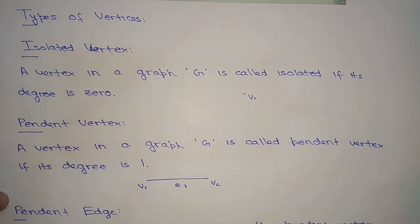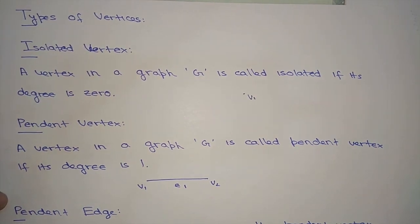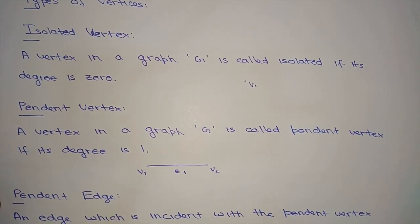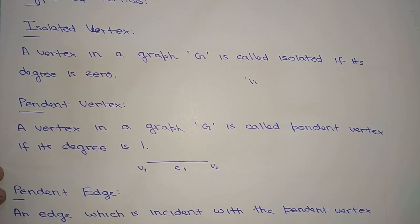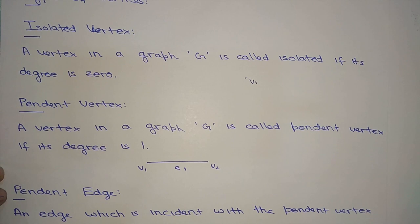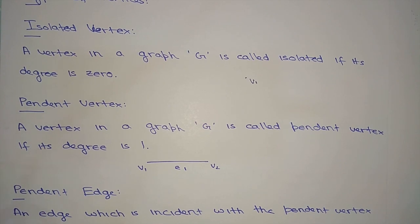V2 also has only E1 incident to it. So both V1 and V2 are pendant vertices. Similarly, a pendant edge is an edge which is incident with a pendant vertex. Here V1 and V2 are pendant vertices, and E1, which is incident on them, is known as the pendant edge.